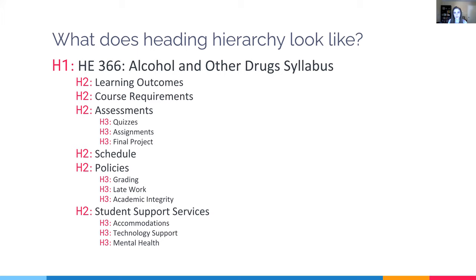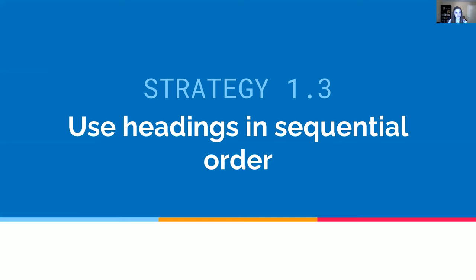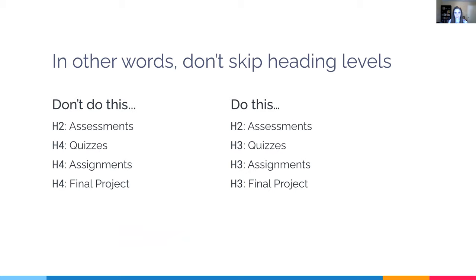H1, or heading level 1, is the highest level and describes the page as a whole — generally a page should have only one H1. Then H2 and H3 represent increasing subsections. If I had a subsection under H3, I'd use H4, going in sequential order. This brings us to the next point: use headings in sequential order, and don't skip heading levels. Skipping levels — like jumping from H2 to H4 — confuses screen reader users who wonder if they missed an important intermediate section.